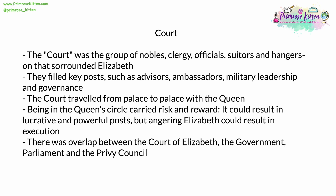The word court, to some extent, is still in use today — ambassadors to the United Kingdom are usually known as ambassadors to the Court of St. James. The court can be defined as the group of nobles, clergy, officials, suitors, and various hangers-on that surrounded the monarch. They filled key posts such as advisors, ambassadors, military leadership, and posts in government. The court was not one single physical location — it travelled to wherever the monarch was. Elizabeth in particular liked to travel, especially around the south of England. Being within the inner circle of the Queen carried both risk and reward — it could result in lucrative and powerful posts, but angering Elizabeth could result in imprisonment, punishment, or even execution, usually by beheading.